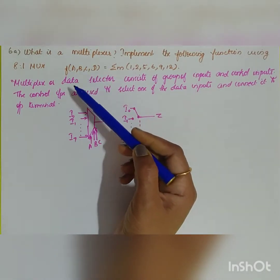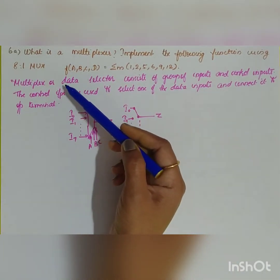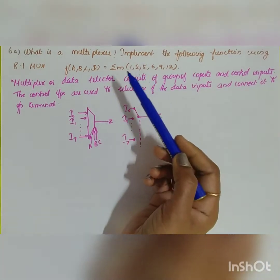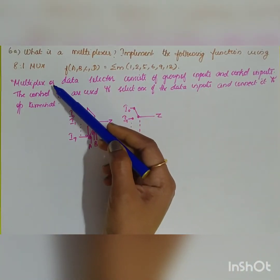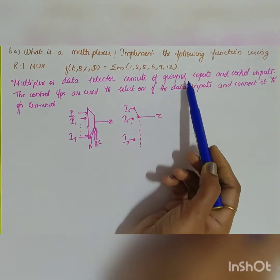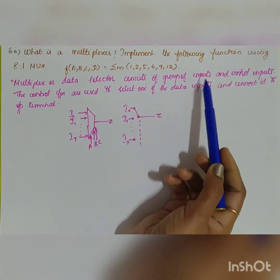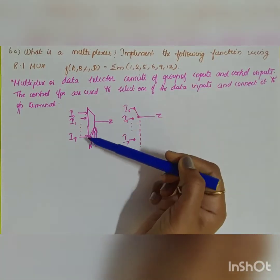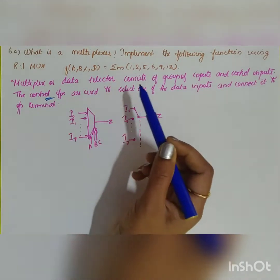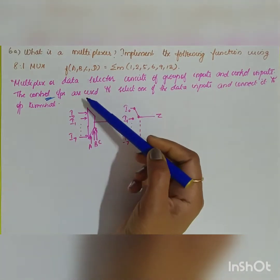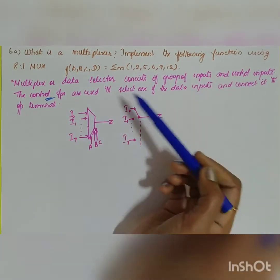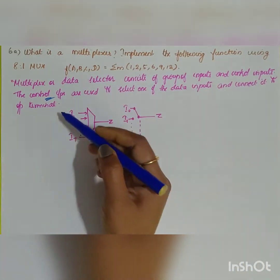What is meant by multiplexer, or mux? It is also called a mux. Mux means many-to-1. It can be defined as: a multiplexer or data selector consists of a group of inputs and control inputs. These control inputs are also called select lines. Select lines are used to select one of the data inputs and connect it to the output terminal.